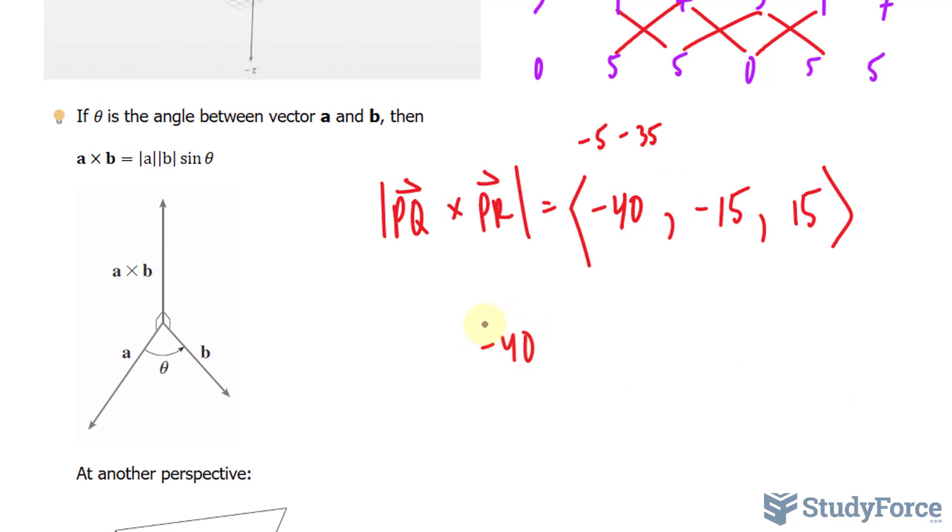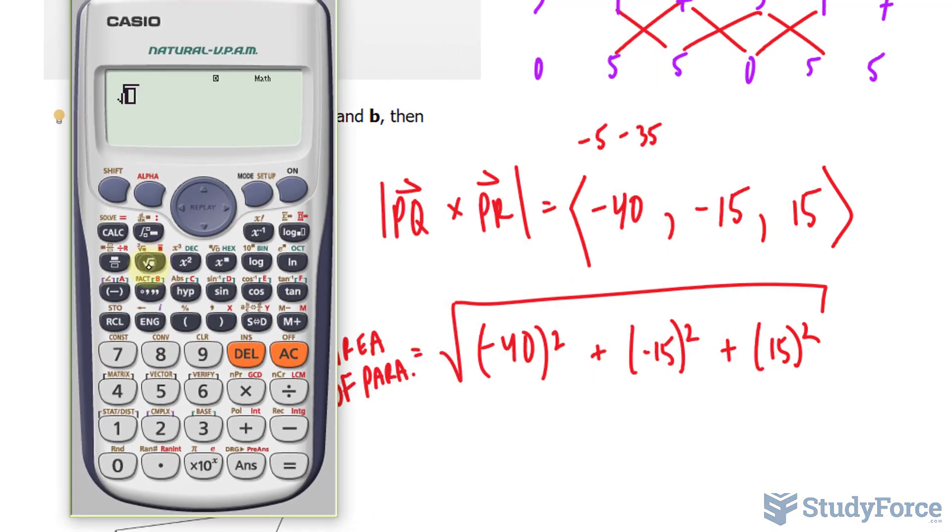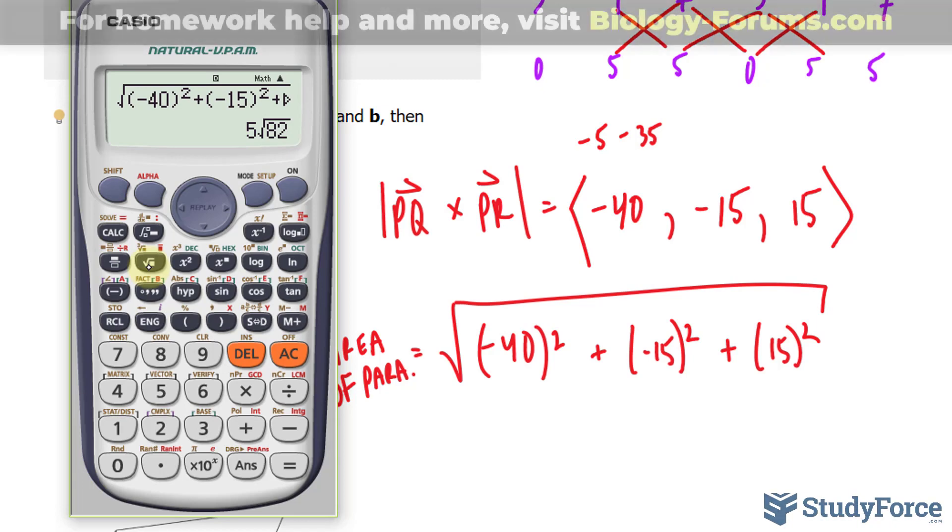We have negative 40 raised to the power of 2 plus negative 15 raised to the power of 2 plus 15 raised to the power of 2, all square rooted. This will give us the area of the parallelogram. Let's use our calculator. The square root of negative 40 raised to the power of 2 plus negative 15 raised to the power of 2 plus 15 raised to the power of 2.